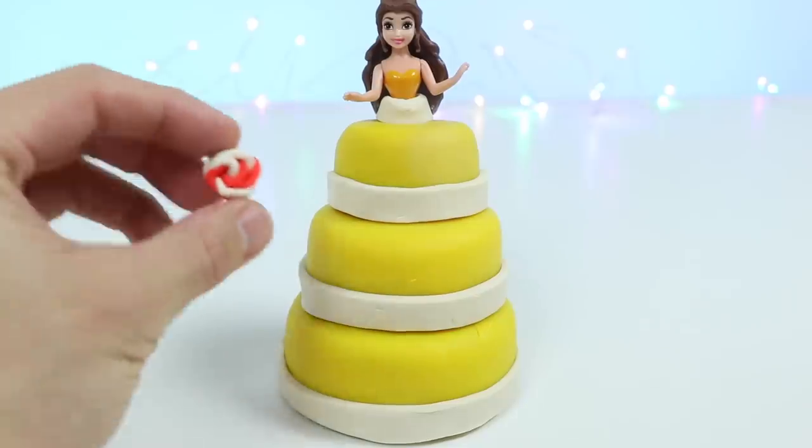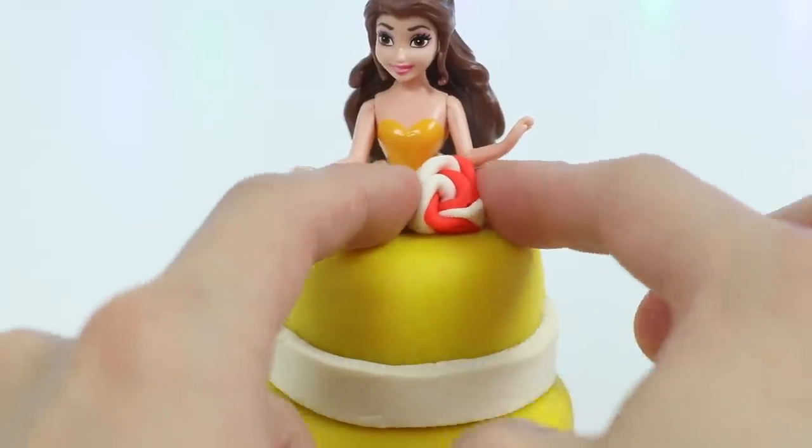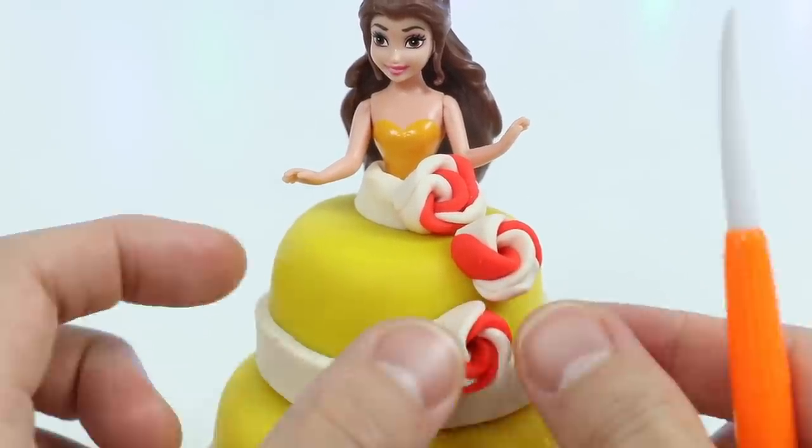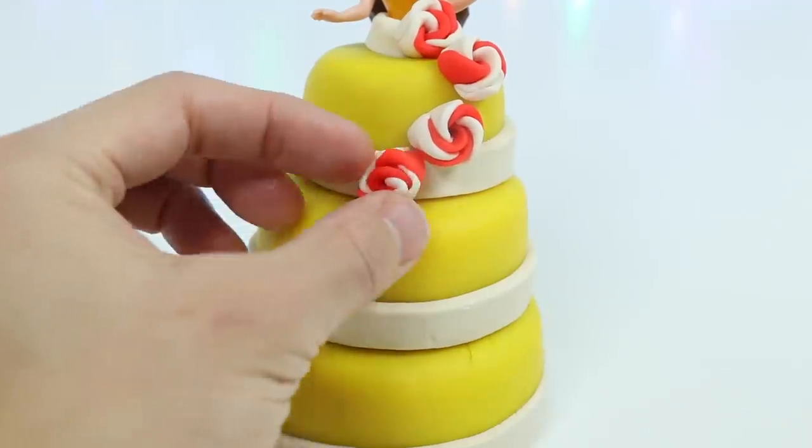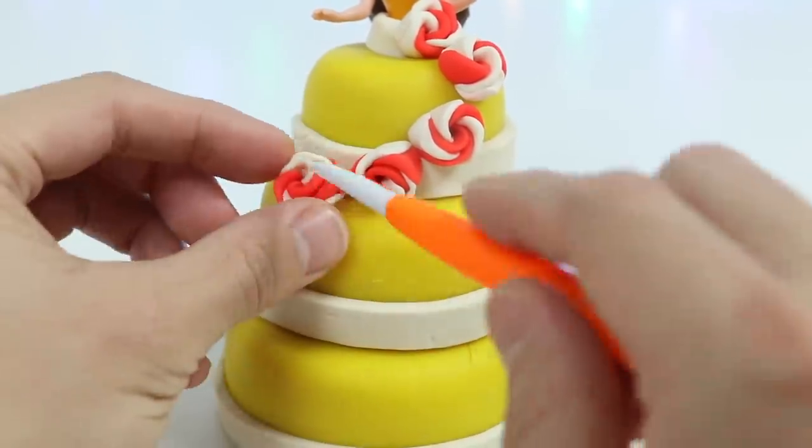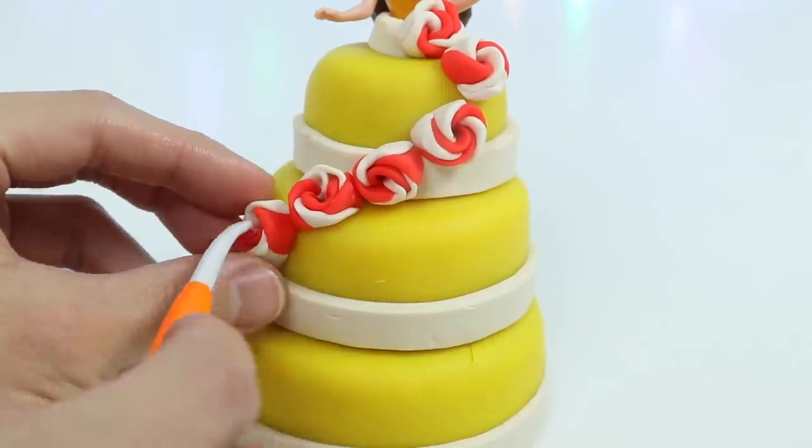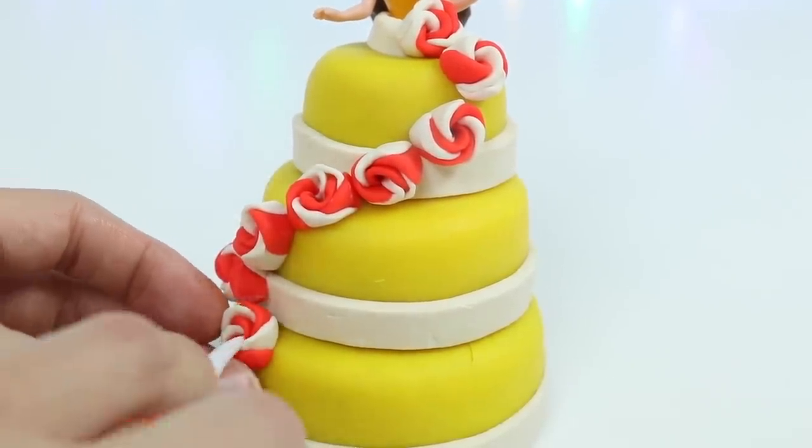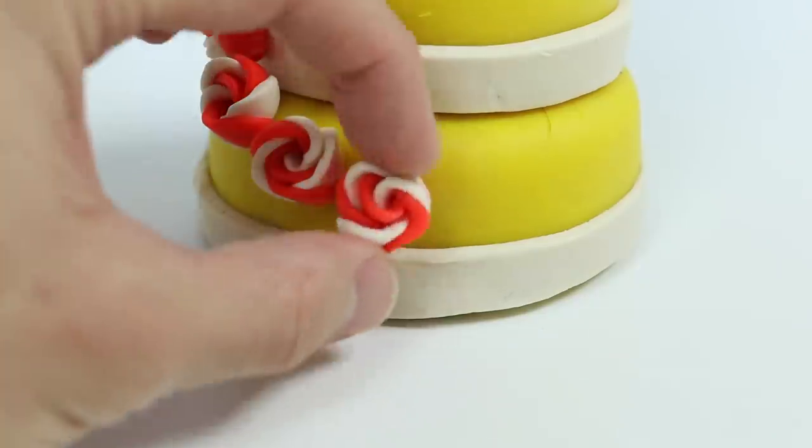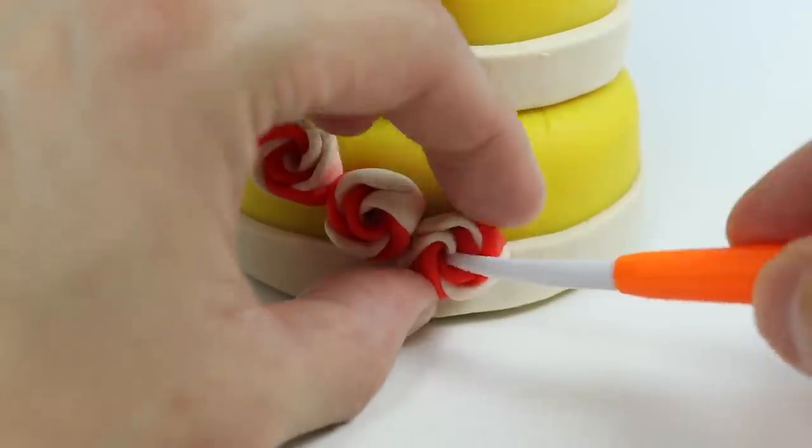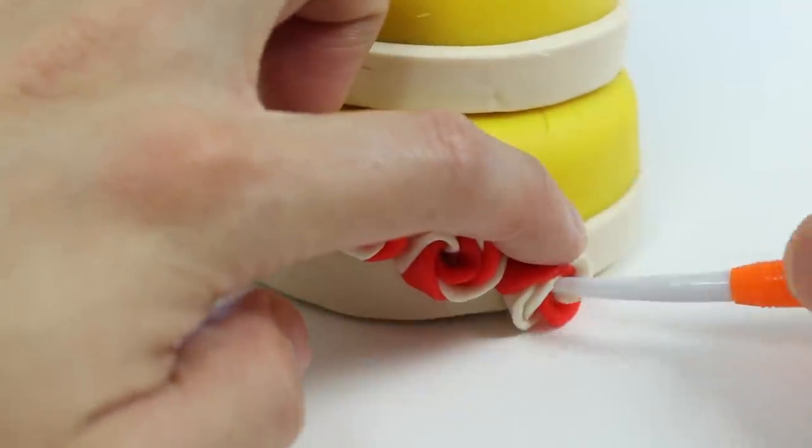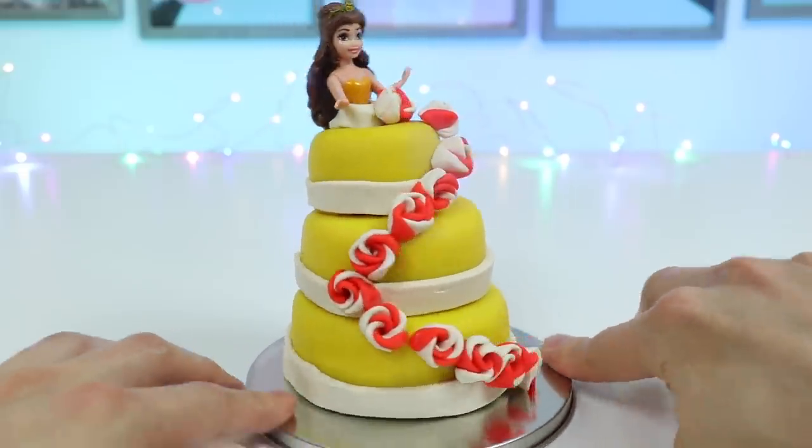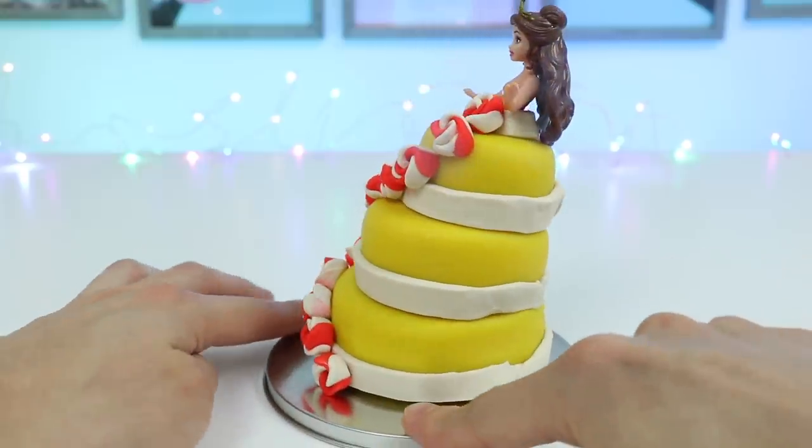Perfect! Now let's add these flowers onto our cake. Here's our Play-Doh Princess Dress Cake. Princess Belle has a beautiful yellow dress on, and the flower decorations are lovely.